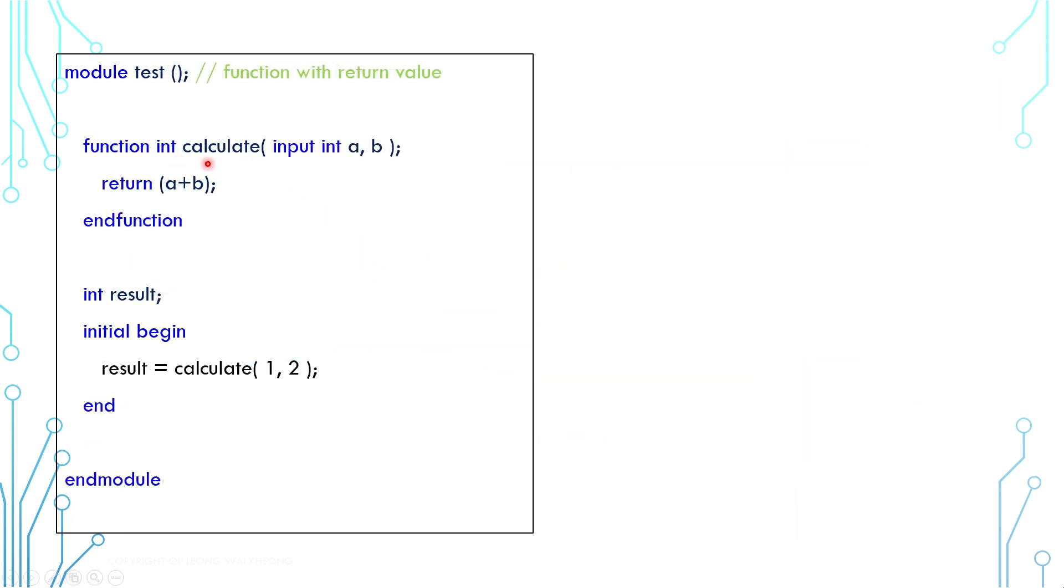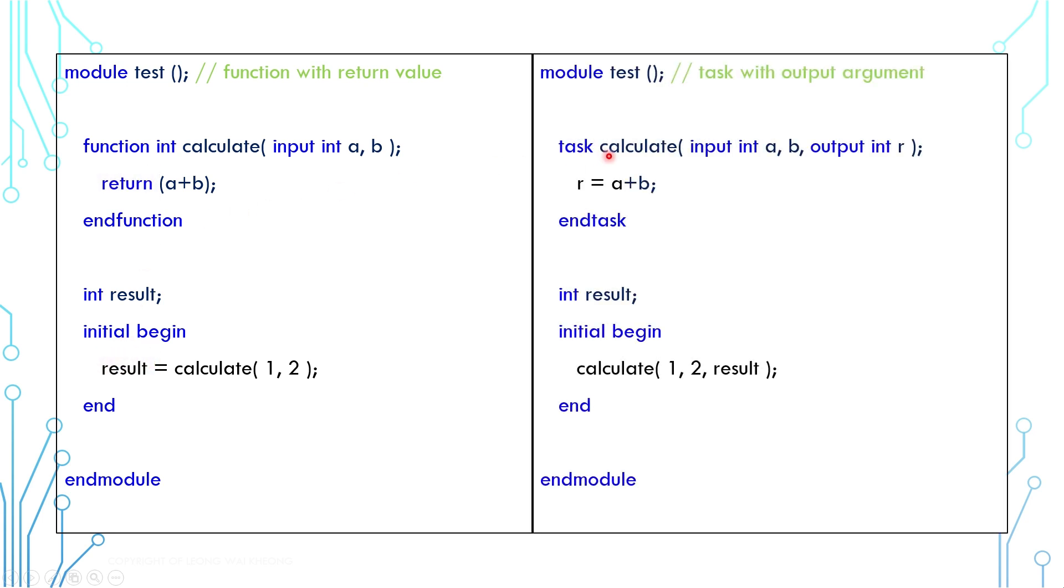This is a function example with return value. Remember that task does not support return value. Now with output arguments, task can achieve the same feature as function. As a matter of fact, you can have multiple output arguments as compared to one return value of a function. Having said that, function can have output arguments too.